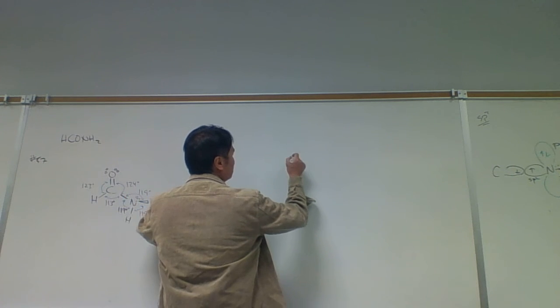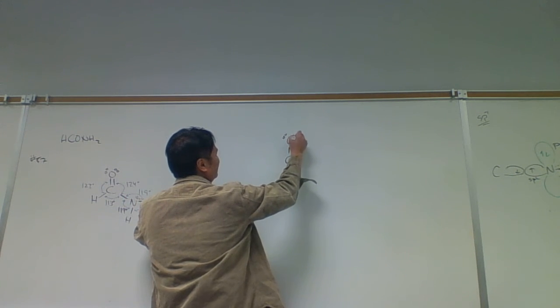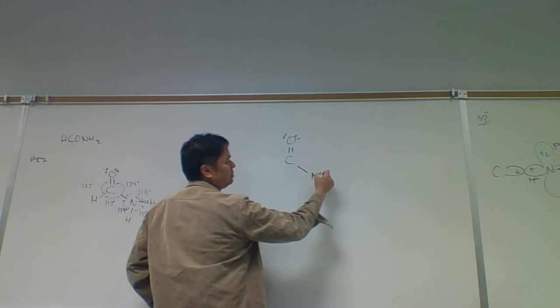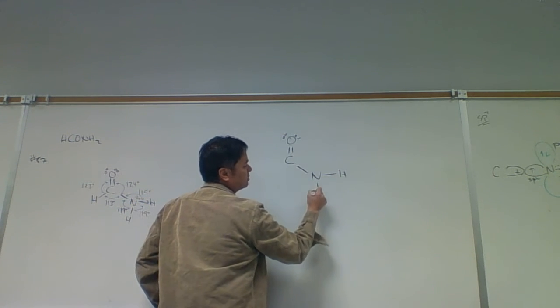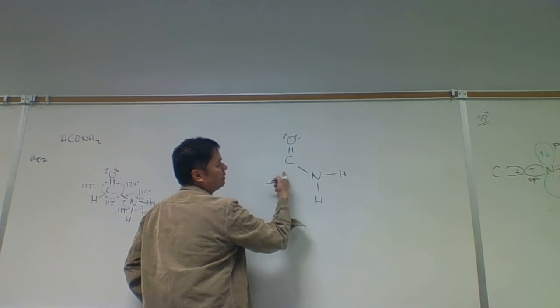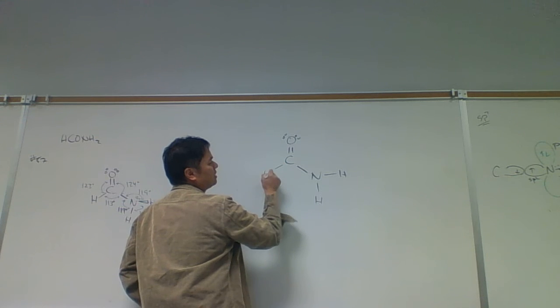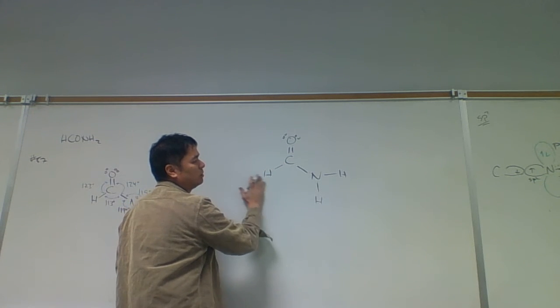I'm going to just draw this top view here. We've got the oxygen here. Now, if the nitrogen is sp2 hybridized, that means the hydrogens are going to be in a trigonal planar arrangement with the carbon. So all this is trigonal planar. And so take a look, this molecule is going to be totally flat.